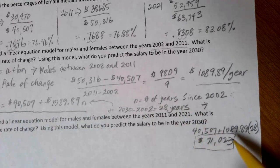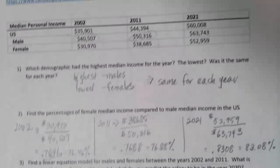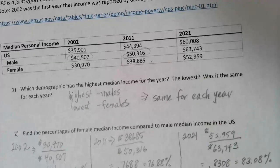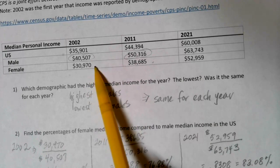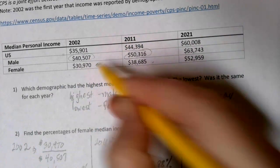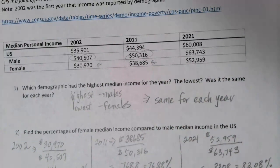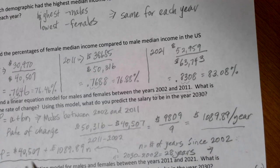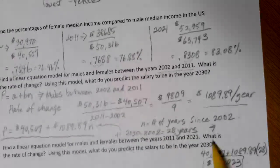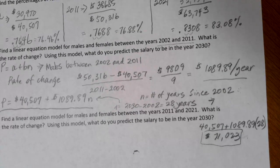So that's how we calculate for the males group. The female group is calculated in exactly the same way, only using the female numbers. For question three, we use the 2002 and 2011 values: $30,970 and $38,685. We subtract those and divide by nine — the number of years — to find the rate of change. Then we use the female salary in 2002 as our starting point and plug in 28 to get the prediction for 2030.